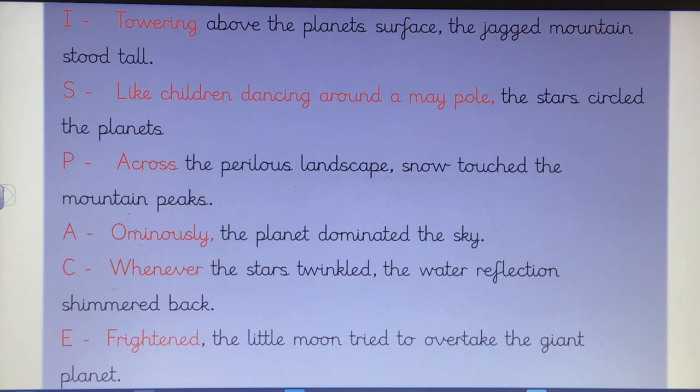For P for preposition, I've got across the perilous landscape, snow touched the mountain peaks. So across is a preposition. It is telling you where something is situated. So I'm saying that across that landscape, that is where the snow is touching the mountain peaks.